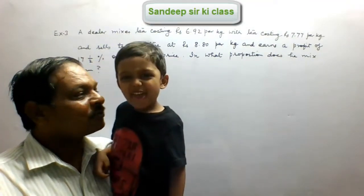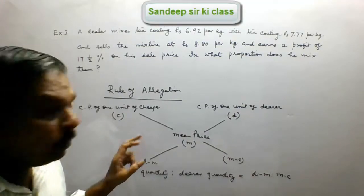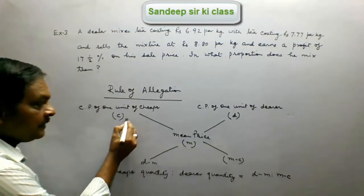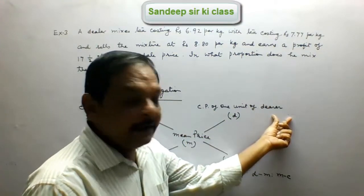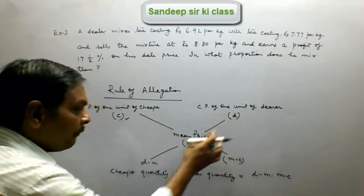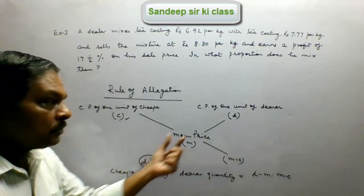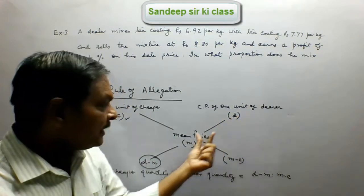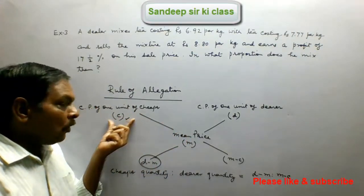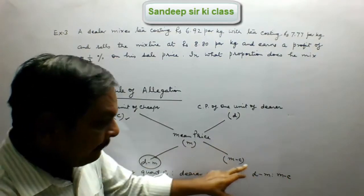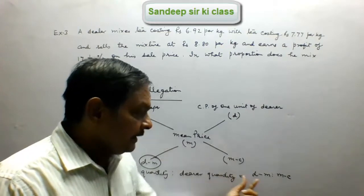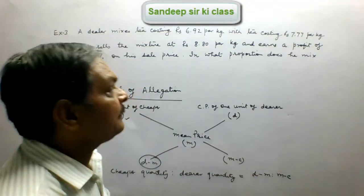For solving this question we will understand the rule of allegation. CP of one unit of cheaper commodity, let us say it is C, and CP of one unit of dearer commodity, let us say it is D. Mean price is M. Then D minus M is calculated because the dearer commodity price is more than the mean price. We also calculate M minus C, and then cheaper quantity to dearer quantity ratio is D minus M : M minus C.